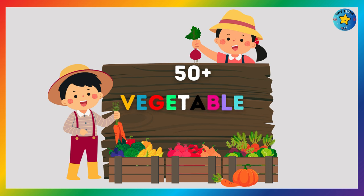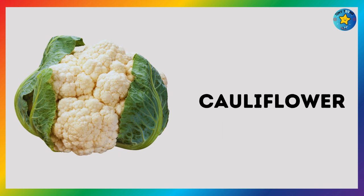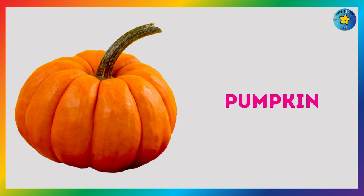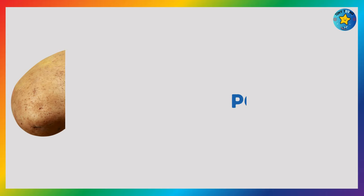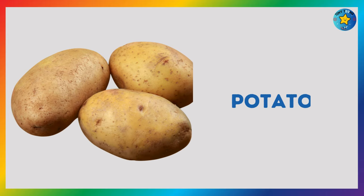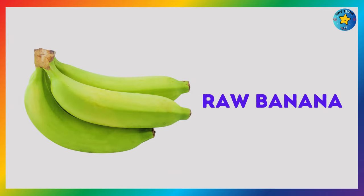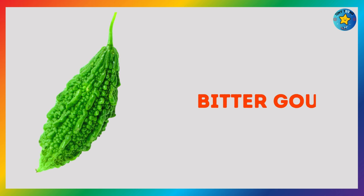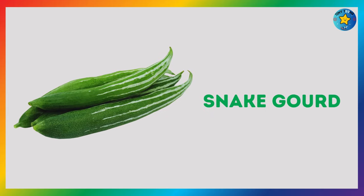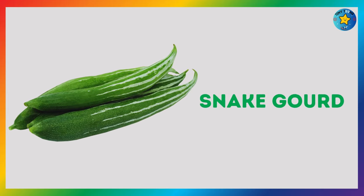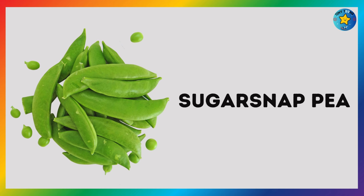Hello children, welcome to my channel. Today we will learn about 50 plus vegetables name in English with picture. Let's start the video. Cauliflower, pumpkin, potato, raw banana, bitter gourd, snake gourd, sugar snap pear.